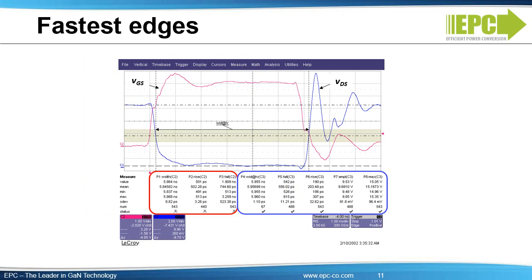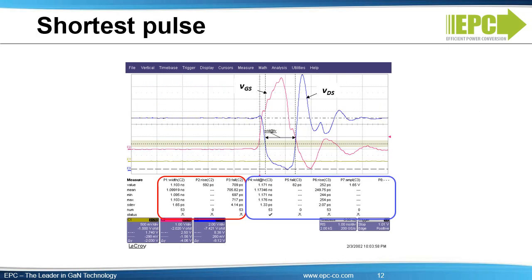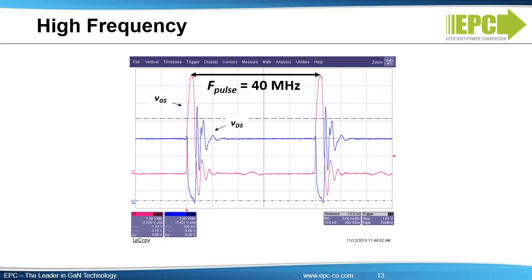A waveform shows a single pulse from the EPC-9144 with a 1-ohm resistive load, achieving a 9.9-amp pulse with a rise time of 556 picoseconds and fall time of 203 picoseconds. A second waveform shows the high pulse repetition frequency operation of the EPC-9144, with individual pulses 2 nanoseconds wide at 7.5 amperes, operating continuously at 40 megahertz pulse repetition frequency. The pulse frequency is limited by power dissipation in the resistive load.